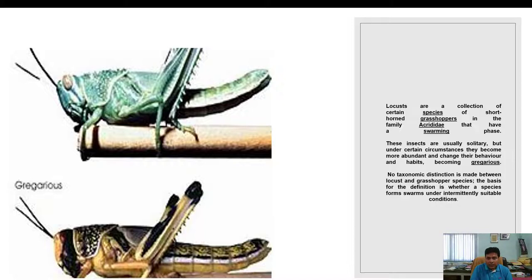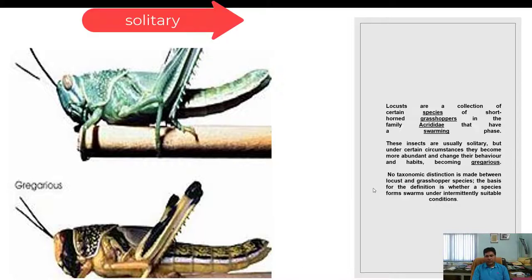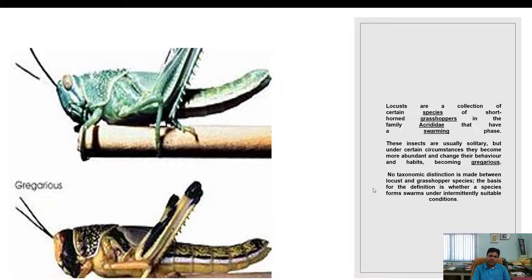What is a locust? A locust is a collection of certain species of short-horned grasshopper belonging to the family Acrididae. Locusts have two phases: a solitary phase and a swarming phase. Insects are usually solitary, but under certain circumstances they become more gregarious and change their behavior. There is no taxonomical distinction between the solitary and gregarious phase — it is a single species.